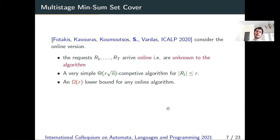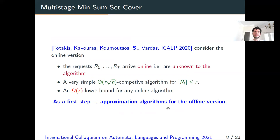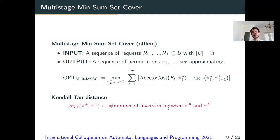In last year's work with a different set of authors, we considered the online version of the problem, where requests arrive online and are unknown to the algorithm. We provided a very simple O(R² log N) competitive algorithm when the cardinality of each request is bounded by parameter R, and showed an Ω(R) lower bound for any online algorithm. This leaves a large gap between R² log N and R, and the rich combinatorial structure of the multi-stage min-sum set cover problem motivated this work.